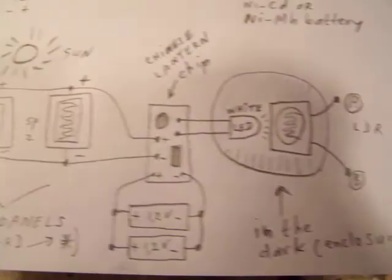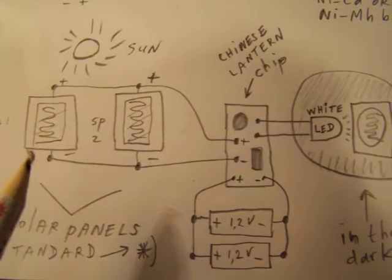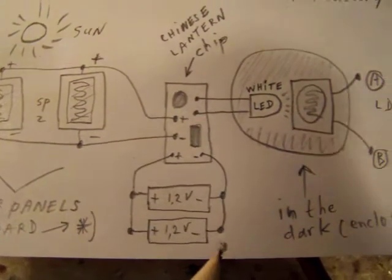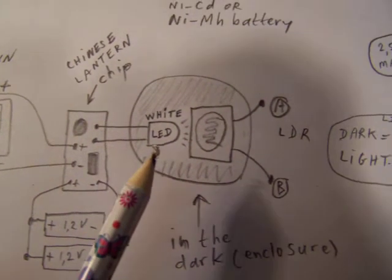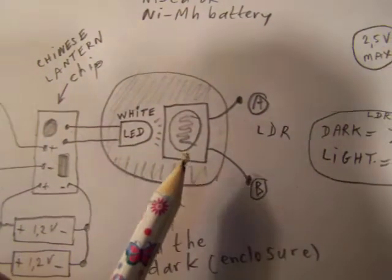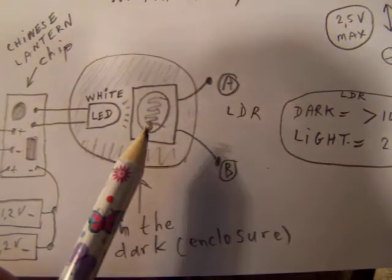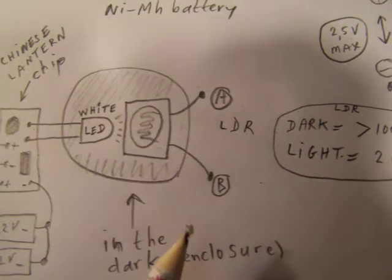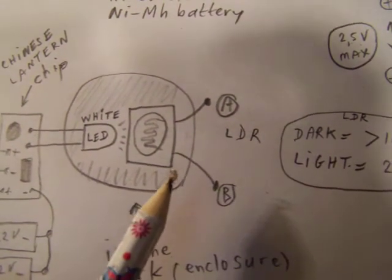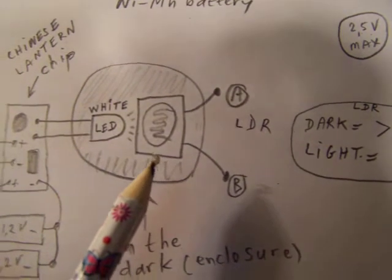And what happens is this: when the sun shines, these batteries are charged. When it gets dark, the white LED goes on and the resistance from the LDR goes down very substantially from approximately 200K to 20 ohms.